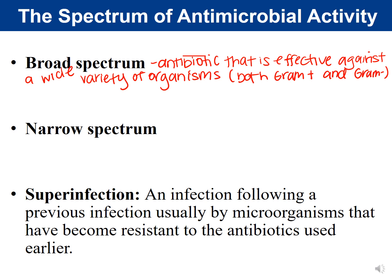A broad spectrum antibiotic is one that is effective against a wide variety of organisms, both gram-positive and gram-negative. An example from our Kirby-Bauer lab work would be norfloxacin — all six bacteria we tested were sensitive to norfloxacin. So that is considered broad spectrum because it targets a wide variety of organisms.